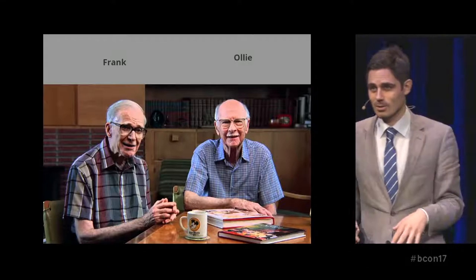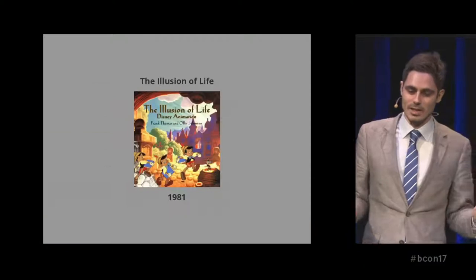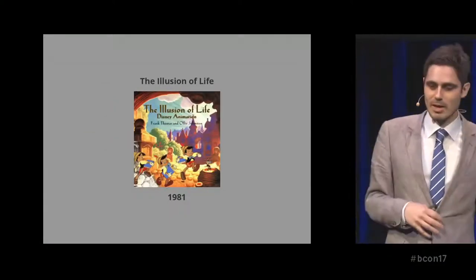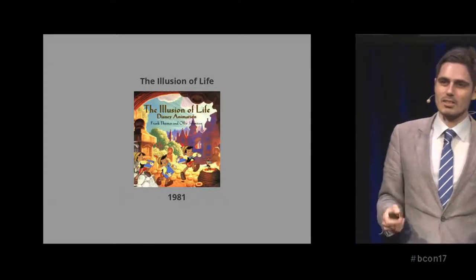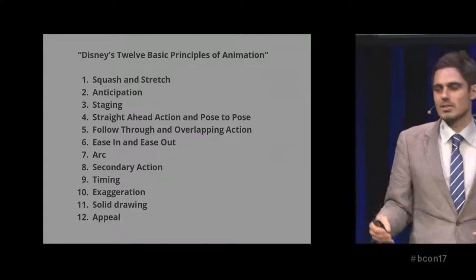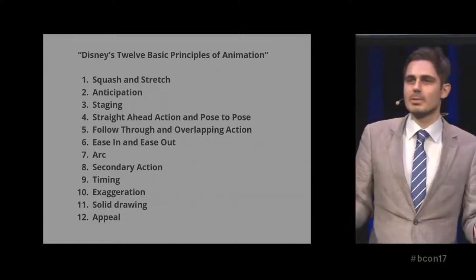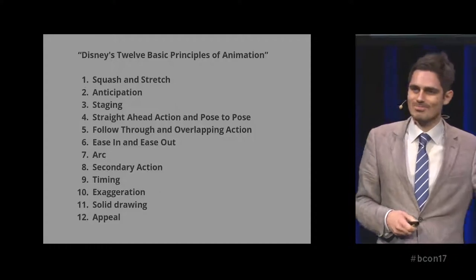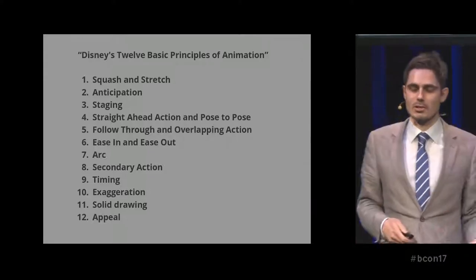This is Frank and Ollie — Disney legends, two of the Nine Old Men. In 1981 they published a book that is a compilation of things they learned way back in the 30s. This compilation included a lot of different concepts, and there's a famous list called Disney's 12 Basic Animation Principles. It's a list because humans love to make lists, but the order it's presented in is a little bit nonsensical — it's not like you need to learn squash and stretch first.